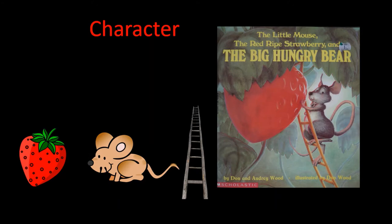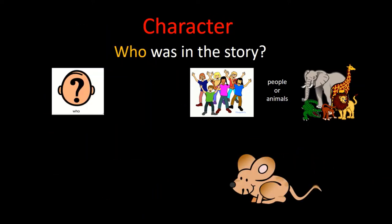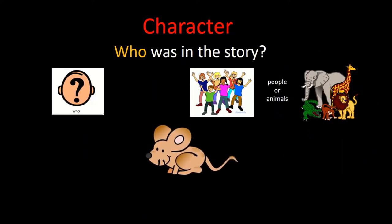Your answer is either going to be people or animals. So who do you think the main character is in this story? You can get a hint from looking at the cover. Was it a strawberry, a mouse, or a ladder? If you guessed the mouse, you were right. Remember, when you ask a who question, the answer is going to be a person or an animal.